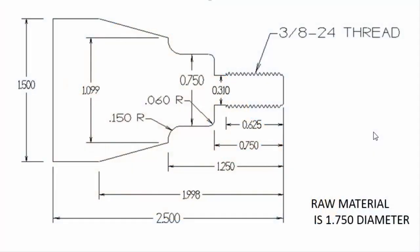So first of all let's take a look at the part dimensions and then I'll go over a process plan. We're looking at the dimensions of the part. We're going to start off with a piece of raw material that is 1.750 inches in diameter. It's two and a half inches overall length. The largest diameter left on the part is going to be one and a half inches. On the front we're going to have a 3/4-24 thread. The part shape grows from front to rear, so we're going to start off by rough facing, then rough turning, finish turning, grooving and threading.